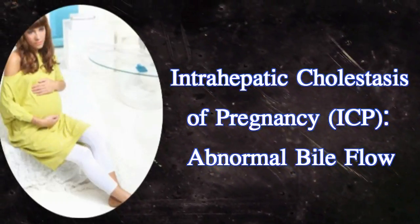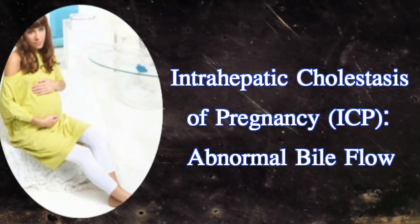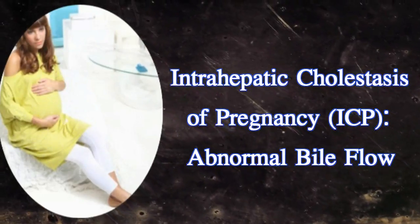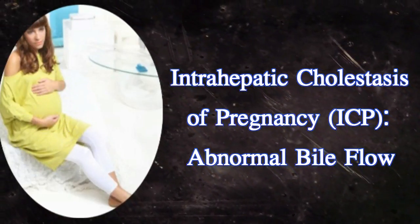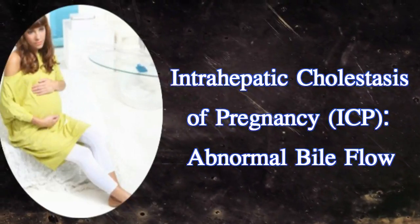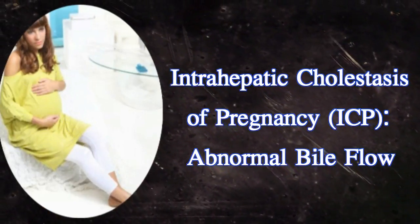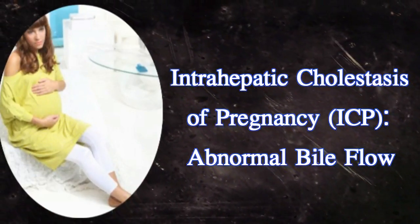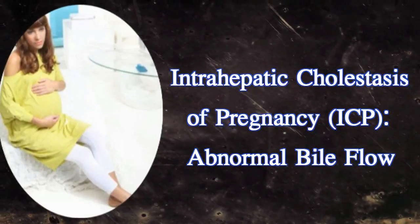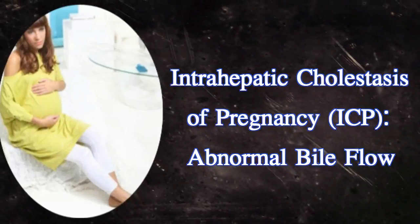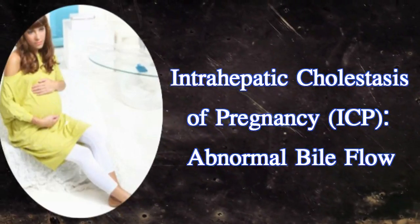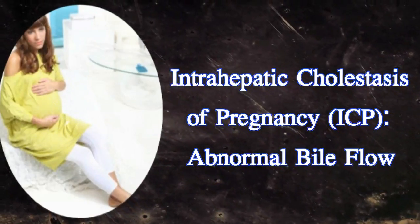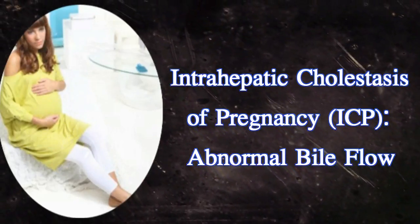Intrahepatic cholestasis of pregnancy (ICP) — abnormal bile flow. ICP is one of the common liver problems experienced during pregnancy, related to the flow of bile. It occurs due to an abnormal flow of bile and buildup of acids. Associated symptoms are jaundice with bloody stools and dark-colored urine. There is severe itching accompanied by rashes, and women face bouts of anxiety and fatigue. This problem also affects the baby, bearing the risk of meconium staining during childbirth. In extreme cases, preterm labor leads to the death of the baby.